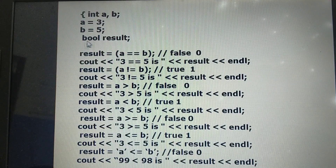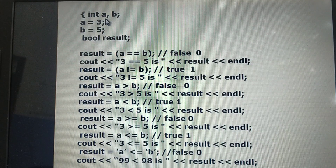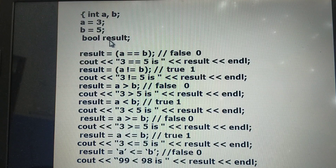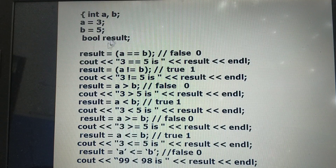Let us discuss a program using relational operators. Here I have written a program with relational operators. I declare two variables for checking the conditions: a and b. The value of a is 3, and the value of b is 5. To store the result, we have taken one variable called result. The data type of result is boolean. Boolean data type is used for true or false.